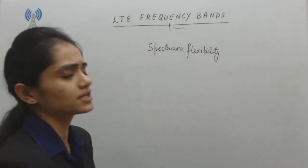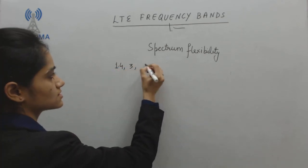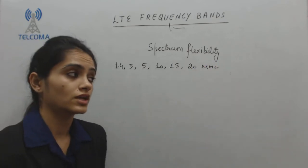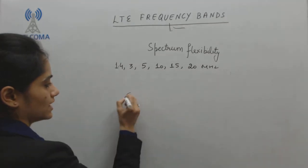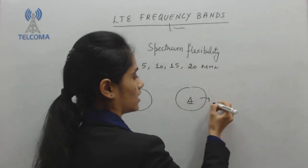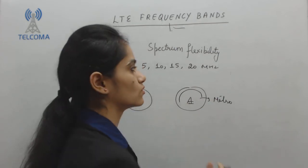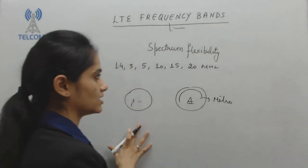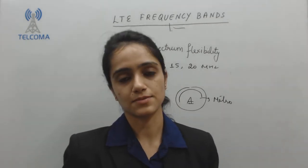LTE has variable bandwidth ranging from 1.4 megahertz, 3 megahertz, 5 megahertz, 10 megahertz, 15 megahertz, and 20 megahertz. You can opt for the spectrum as per the requirement. For example, in area 1 where you need high mobility service like a metro train — the metro is moving at high speed and you need to provide good internet access — you may opt for high bandwidth such as 20 megahertz. In area 2 where you don't require much speed, you can opt for lower bandwidth.